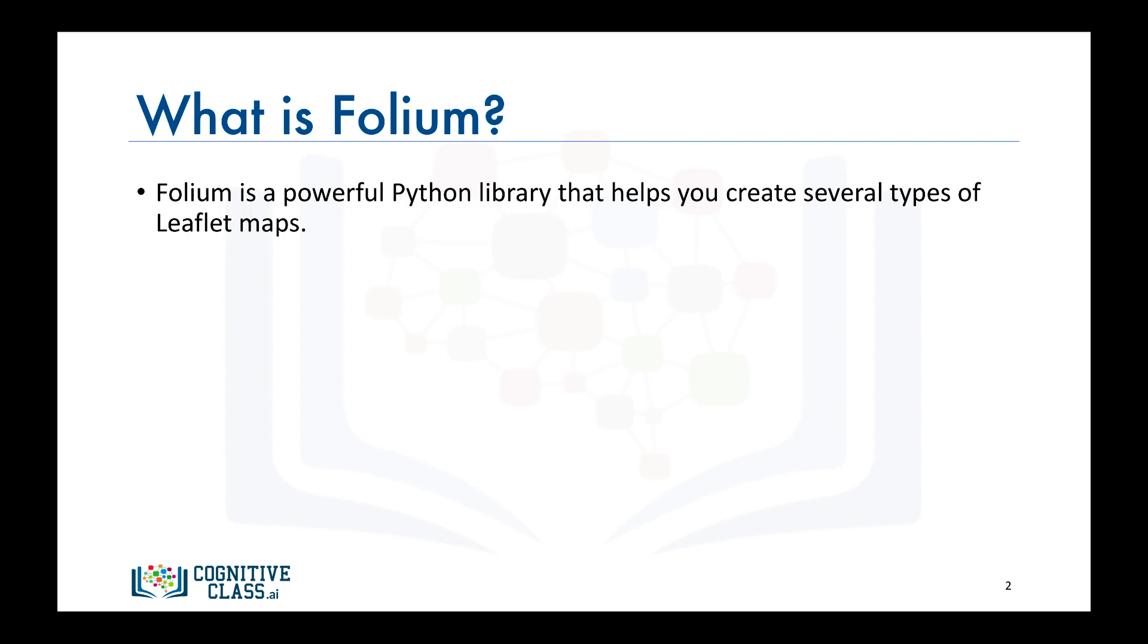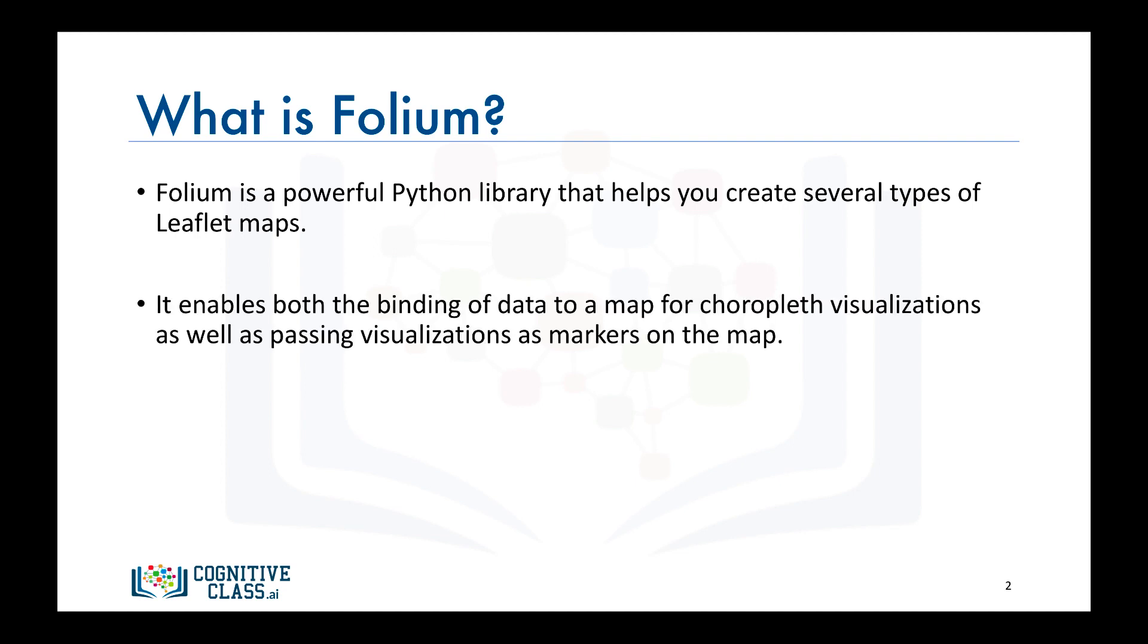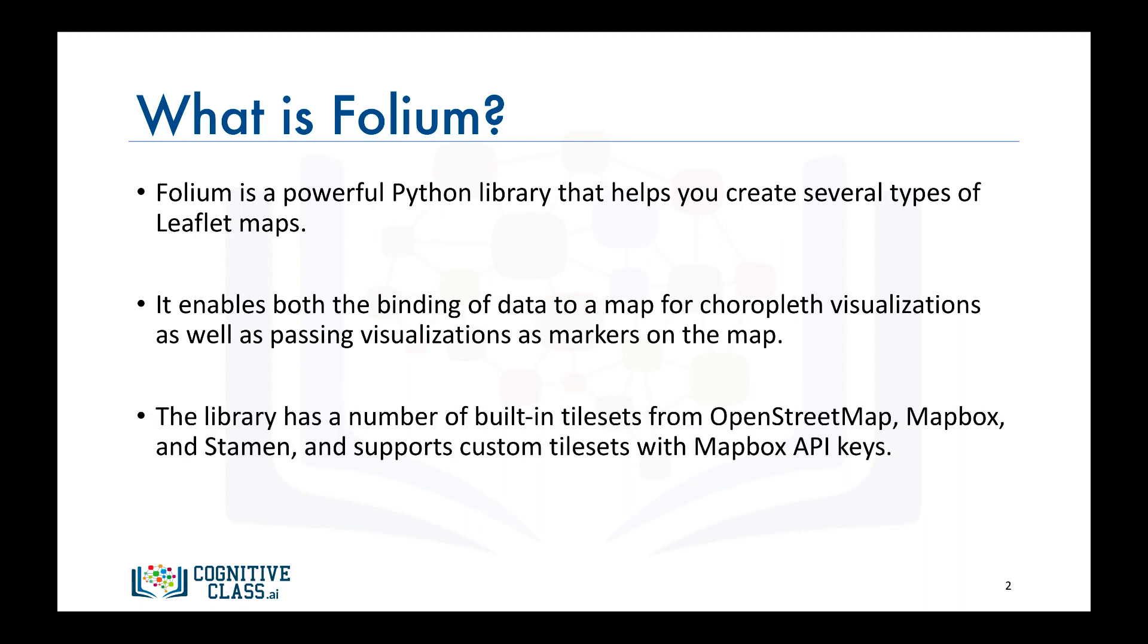With Folium, you can create a map of any location in the world as long as you know its latitude and longitude values. You can also create a map and superimpose markers as well as clusters of markers on top of the map for cool and very interesting visualizations. You can also create maps of different styles such as street level map, a stamen map, and a couple others which we will look into in just a moment.